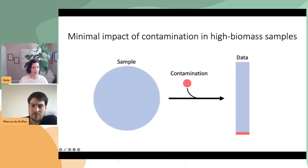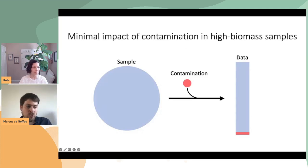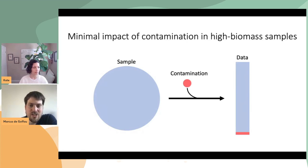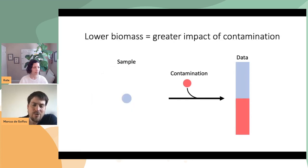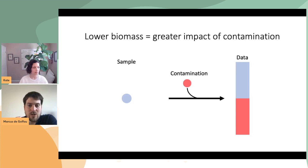If you have a sample with a high amount of biomass, it will suffer a little from contamination, but in your sequencing data the contamination will not really matter a lot. However, if the biomass in your sample is relatively low, then contamination will make up a large amount of your sequencing data — though it's still pretty easy to figure out what is what, as I'll show later.